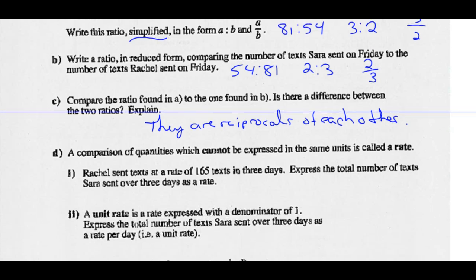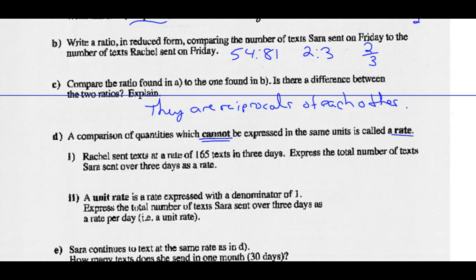A comparison of quantities which cannot be expressed in the same units is called a rate. Rachel sent texts at a rate of 165 in three days. Express the total number of texts Sarah sent over three days as a rate. So if you add up all those texts Sarah sent, we would get 117 texts in those three days. Part 2 says a unit rate is a rate expressed with a denominator of 1. Express the total number of texts Sarah sent over three days as a rate per day. So she sent 117 in three days. Well, 117 over three days. We divide everything by three and you get 39 texts per day. That's her average.